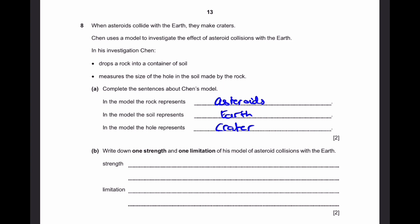Part B. Write down one strength and one limitation of this model of asteroid collisions with the Earth. Well the strengths of this model are that it's very good for experiments. You can change one of the variables, for example the size of the rock, and you can investigate how it affects the size of the crater. So we can say that different investigations related to the size of the crater or the hole can be made.